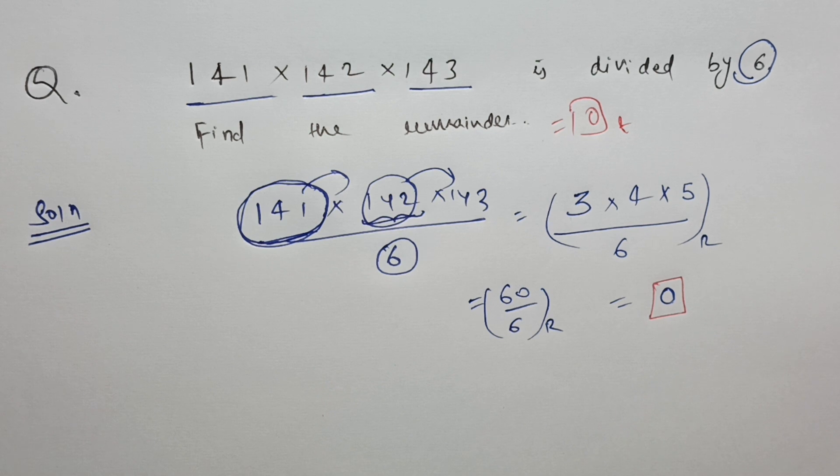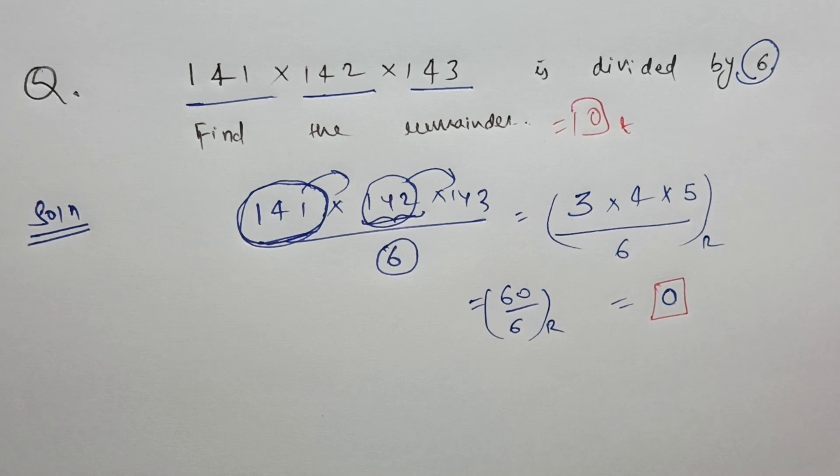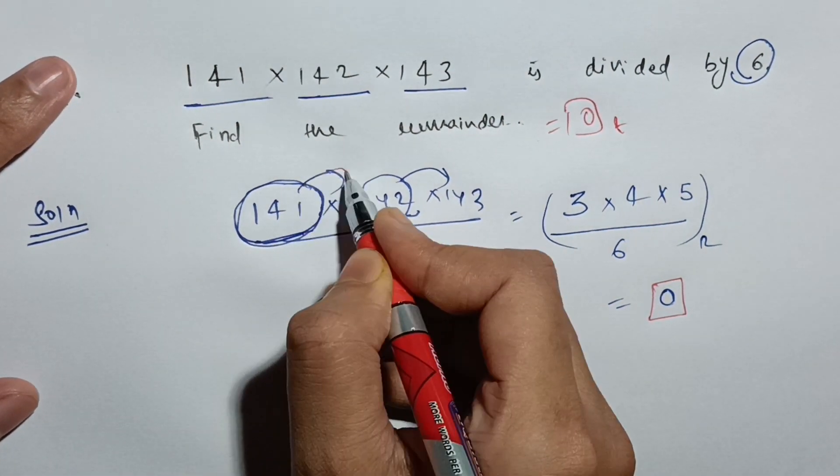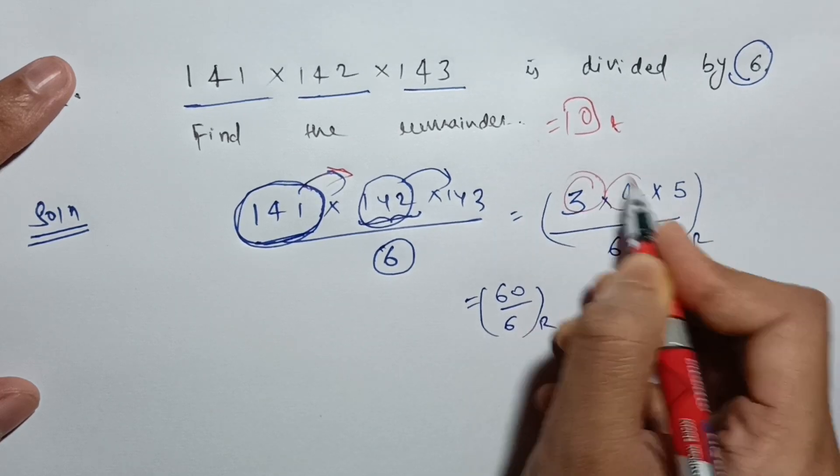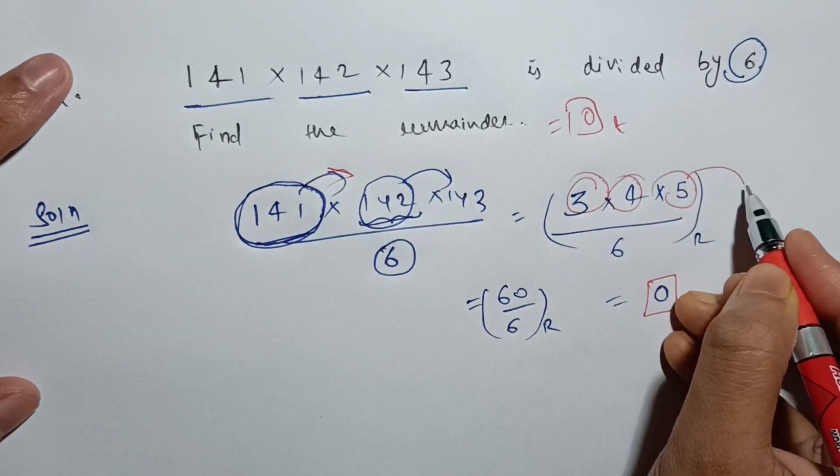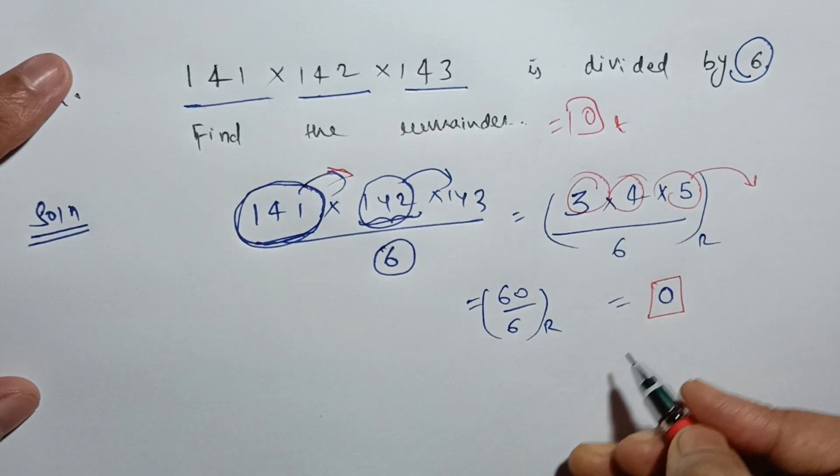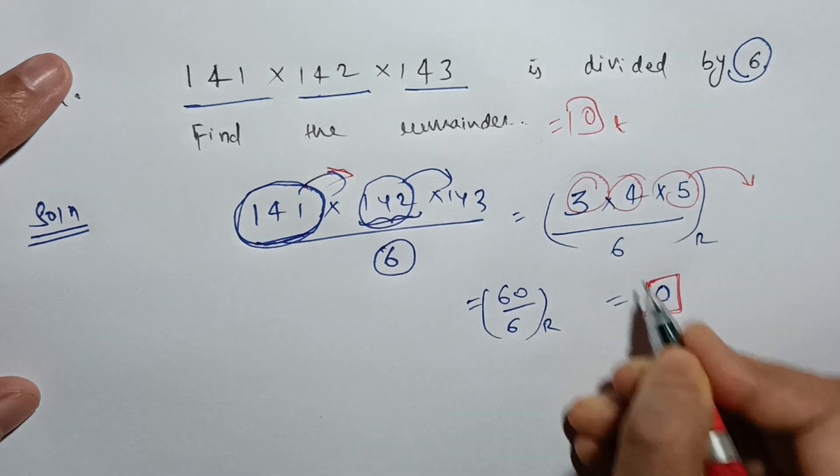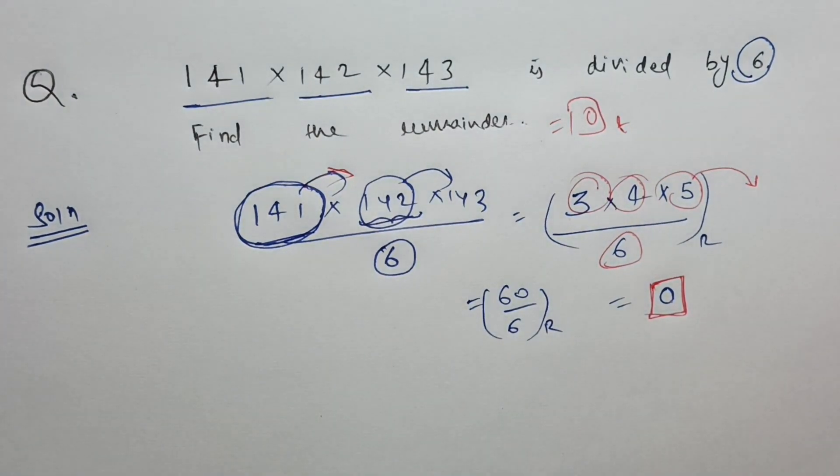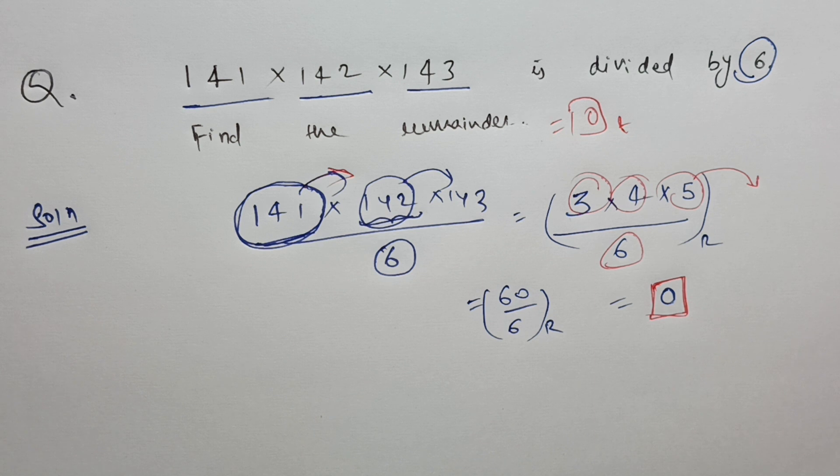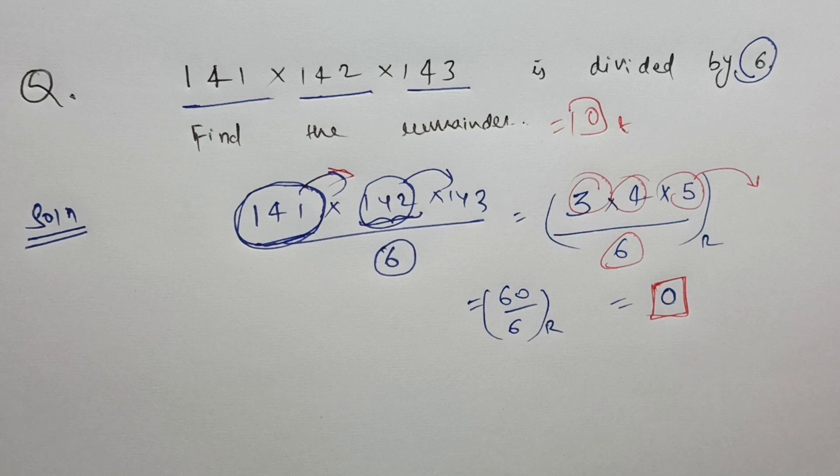So this was a very straightforward question. The only thing you should know is that we can replace our dividends by remainders and keep finding the remainder until we get a value which is less than the divisor. The remainder has to be less than the divisor, it cannot be equal to it. This way we can solve such questions on finding the remainder of products. Thank you.